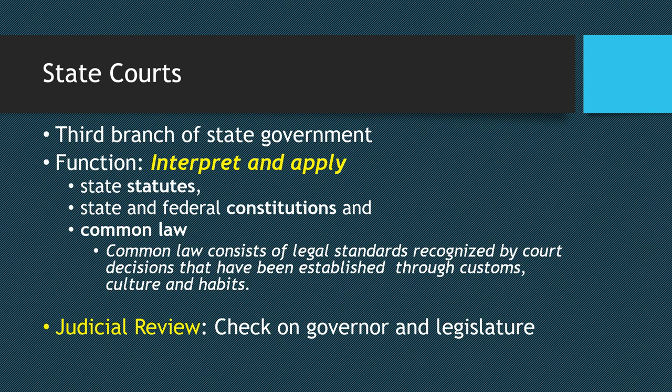To begin with, state courts are the third and final branch of state government. Remember that all states have three branches of government with separation of powers and checks and balances, just like our national government. The judicial branch in a state has the function of interpreting and applying state laws, the state constitution, and the federal constitution. It also applies what is called common law, which is based on judicial precedents.